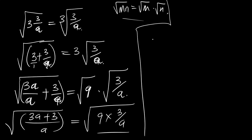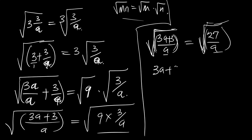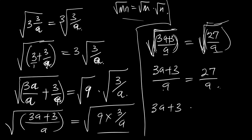We now have the square root of 3 plus 3 all over A equal to the square root of 27 all over A, because 9 times 3 equals 27. Since the denominators are the same, what is inside the square roots must also be equal. So we equate the values inside: 3A plus 3 all over A equals 27 all over A. Since the denominators are the same, we equate the numerators: 3A plus 3 equals 27.